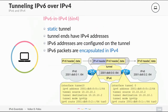Let's have a look at IPv6 and IPv4 tunneling, which is also called 6in4. This is a static tunnel that has to be configured statically — not an automatic tunnel. The tunnel ends both have static IPv4 addresses and are most commonly on routers. The IPv6 packets sent to the router are then encapsulated in IPv4, which is called tunneling.